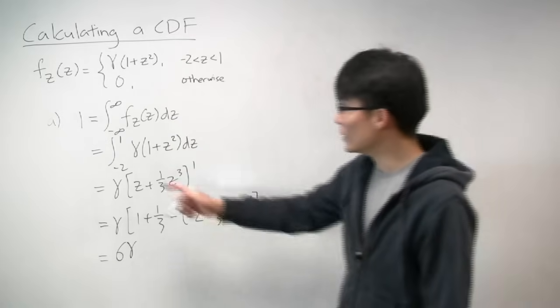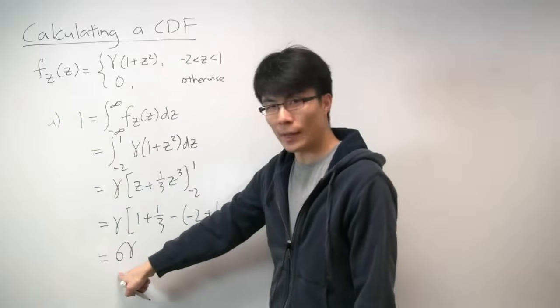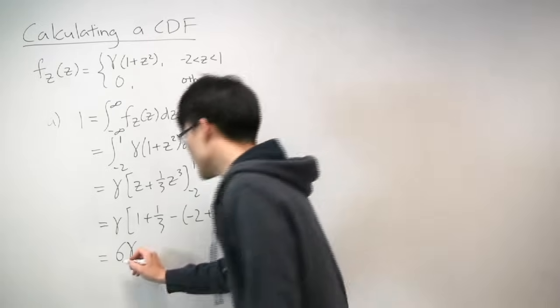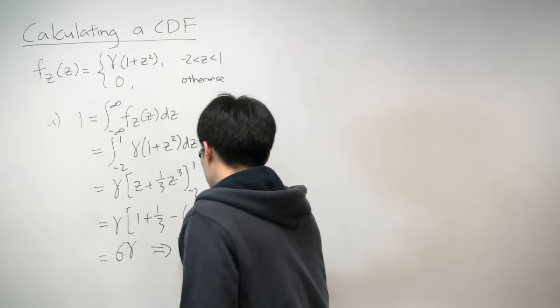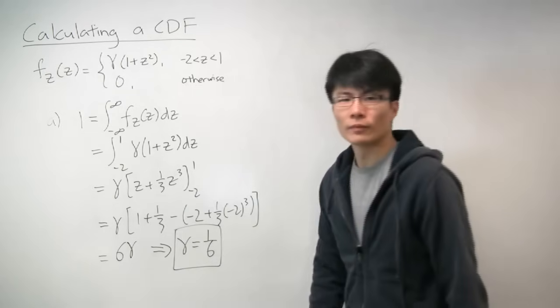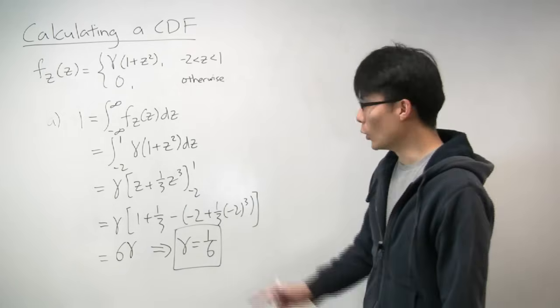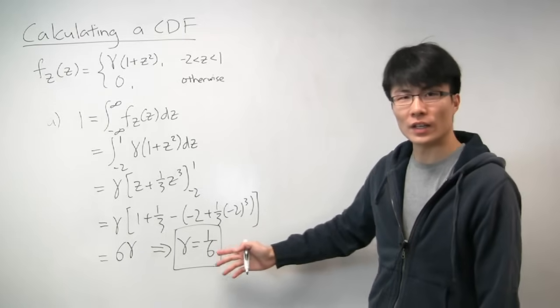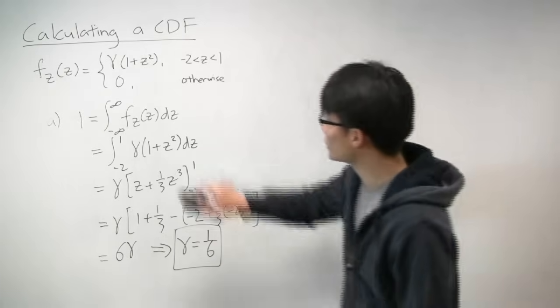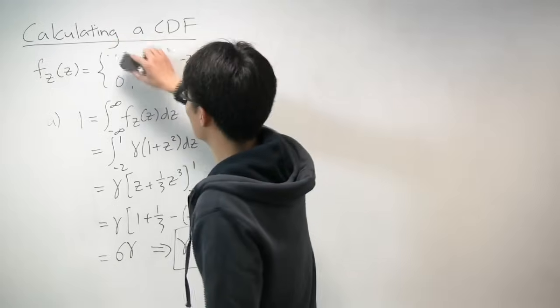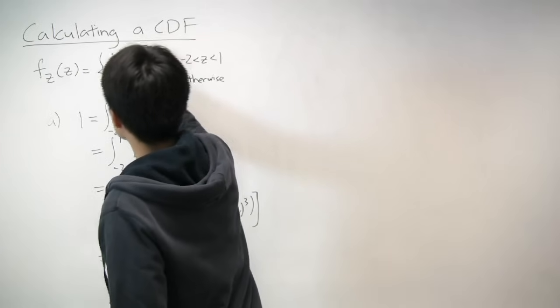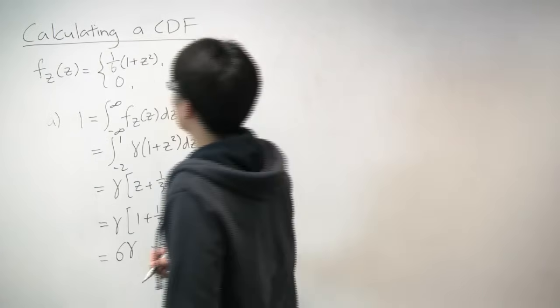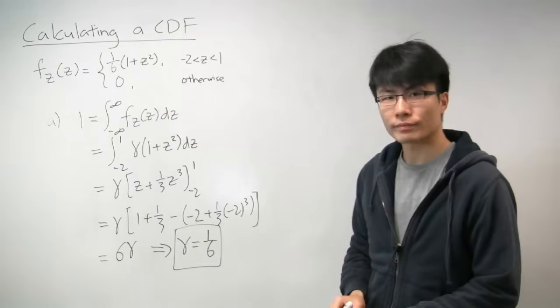So what we end up with in the end is that 1 is equal to 6 gamma. So what does that tell us? That tells us that, in this case, gamma is 1/6. OK, so we've actually figured out what this PDF really is. And we can actually, let's just substitute that in. So we know what gamma is, so it's 1/6.